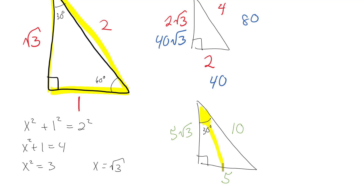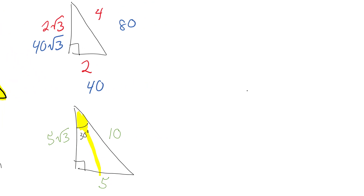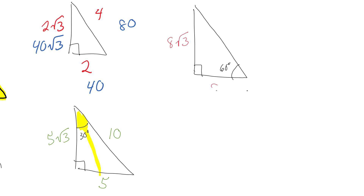The side opposite the 30° is the shortest, the hypotenuse is the longest (double), and the side opposite the 60° is the √3 side. So if I'm given that the side opposite the 60° is 8√3, then the shortest side is 8 and the hypotenuse is 16.